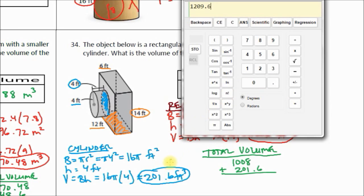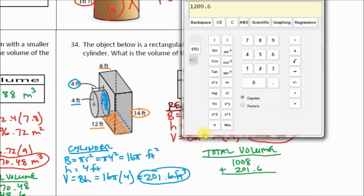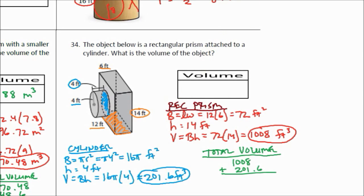You know what, I think I made a mistake here. This is not 201.6. Let's try it again. 16 pi times 4 equals 201.06, that was a mistake. And that means this is 0.06.